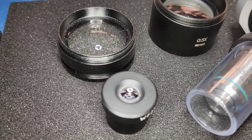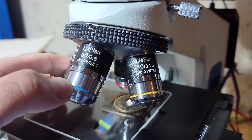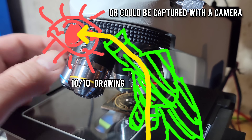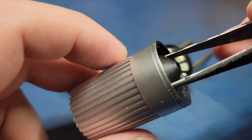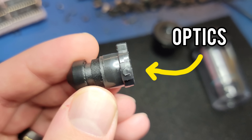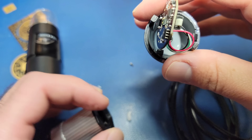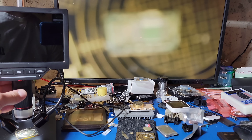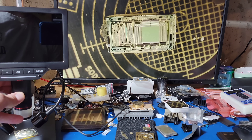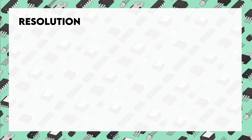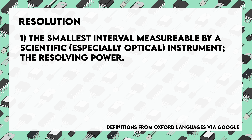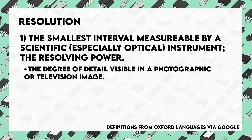Optical microscopes, as the name suggests, use optics to magnify an image. This image is usually formed in your eye when you look into the microscope's eyepiece. The digital microscopes that I've looked at also use optics, but they are much less complex and simplistic. The optics in a digital microscope instead focus the image directly onto an included image sensor, which then converts the light into a digital image that can be viewed with an external computer or an attached monitor. Complementary to magnification is the term resolution, which can be defined as the smallest interval measurable by a scientific — especially optical — instrument, also known as the resolving power. It can also refer to the degree of detail visible in a photographic or television image.